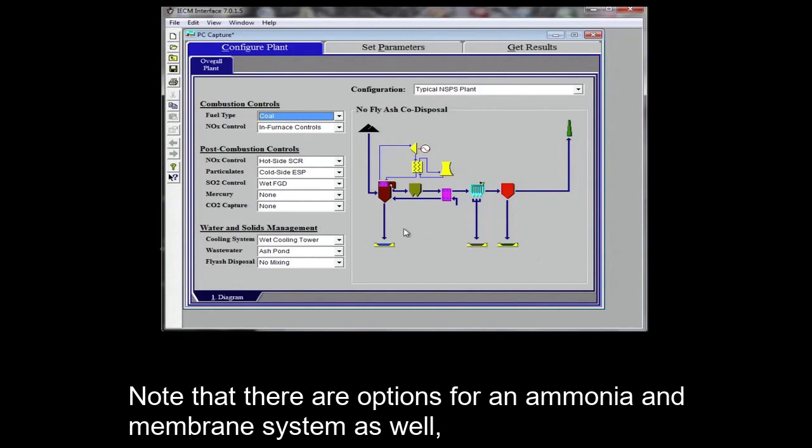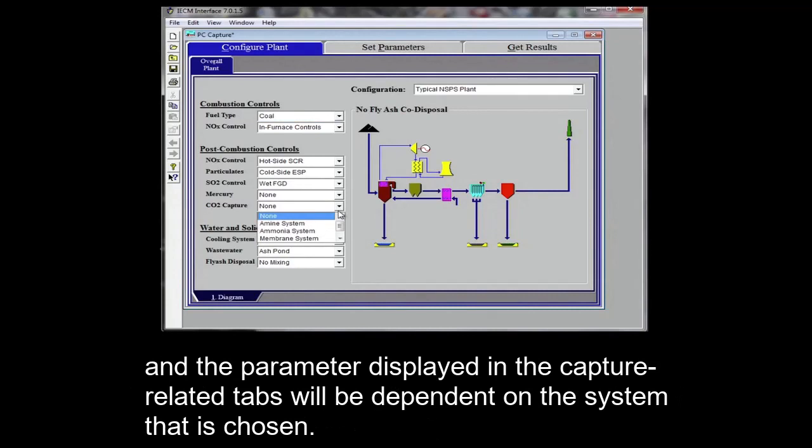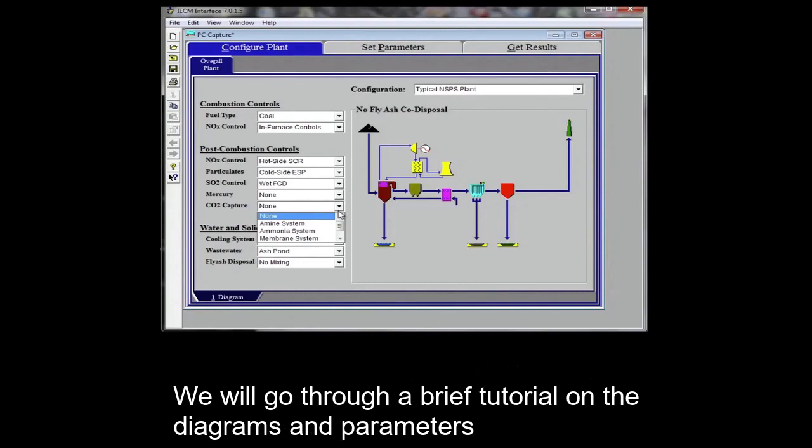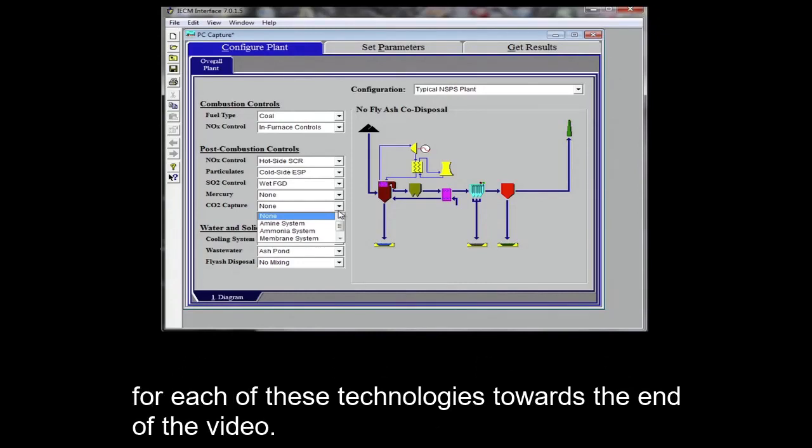This gets inserted after the main sulfur removal system at the end of the flue gas cleanup train. Note that there are options for an ammonia and membrane system as well, and the parameters displayed in the capture related tabs will be dependent on the system chosen. We will go through a brief tutorial on the diagrams and parameters for each of these technologies towards the end of the video.